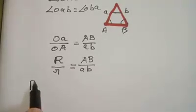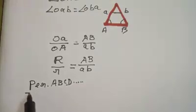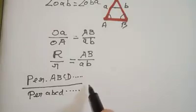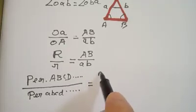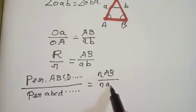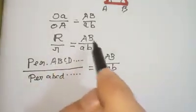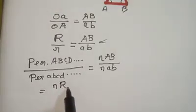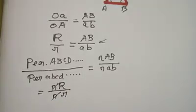So I write the perimeter of polygon ABCD... divided by the perimeter of polygon abcd... which equals — by the perimeter formula of n times side length — n × AB over n × ab. The n cancels out, and since AB corresponds to R and ab corresponds to r from our earlier equation, this simplifies to R/r. So the ratio of perimeters equals the ratio of the radii.